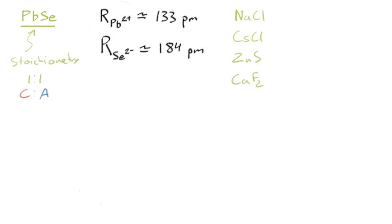And so rock salt, as you know, has cations in octahedral sites. Cesium chloride has the cations in simple cubic sites, and simple cubic lattice of anions. Now zinc sulfide has cations in tetrahedral sites, and calcium fluorite has cations in simple cubic sites.